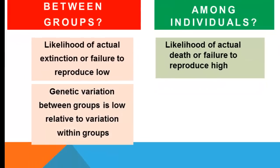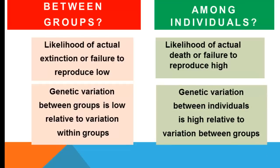A second point, which applies quite forcefully to humans, is that genetic variation between groups is generally low relative to the variation within groups. The genetic variation between individuals within a group is high relative to the variation between groups. The genetic variation between different groups of humans is quite low compared to the variation among the individuals within those groups.